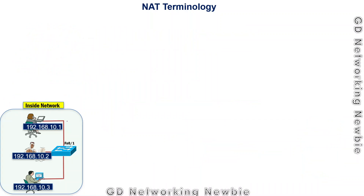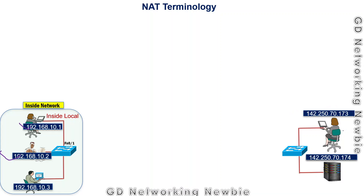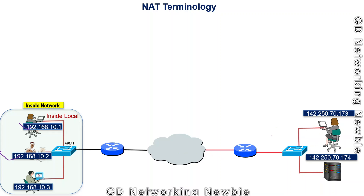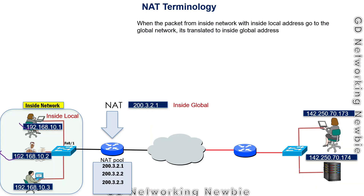For example, devices on the inside network of an organization all have inside local addresses. When a user on the inside network sends a packet, it comes to the router, which translates the private IP to a public IP. That translated IP address is called the inside global address — the address seen on the global internet.